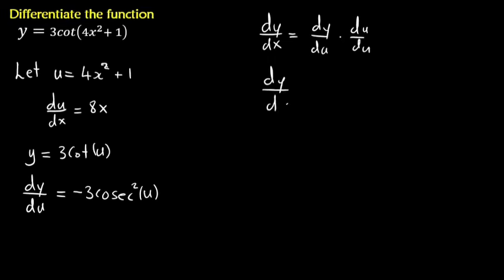So dy dx. So our dy du is negative three cosec, there's a square, like this. This is multiplying with du dx, not du du. So it's supposed to be du dx. So our du dx is 8x.